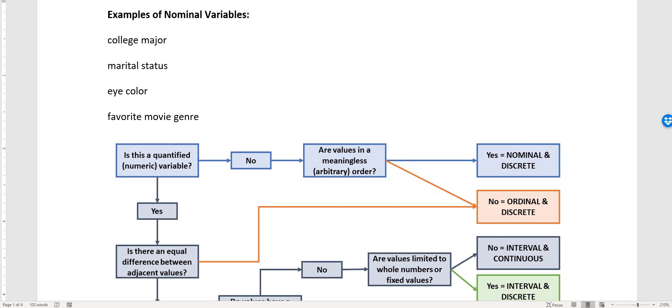If we start with college major, and we always start here, is college major a quantified or numeric variable? If we think about the way that data for that would look, it would be like psychology, business, education - not numbers. That's a big old no.